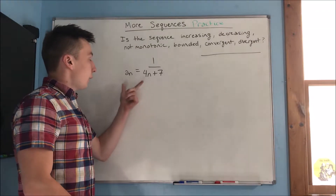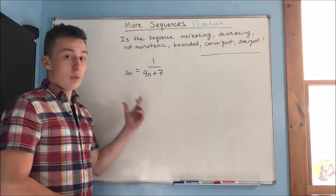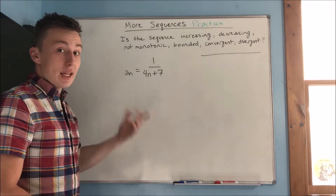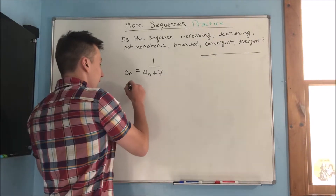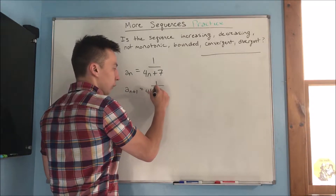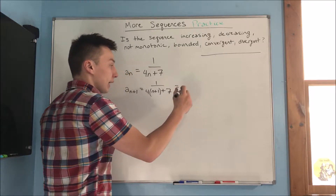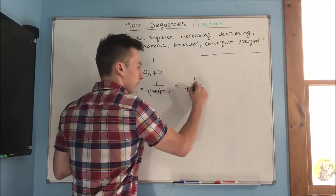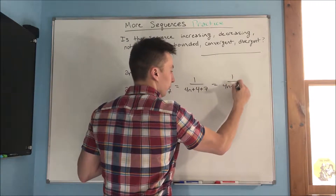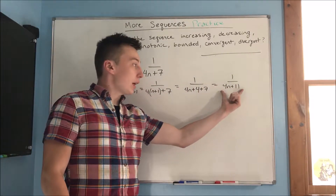Now we have our second sequence: a sub n equals one over four n plus seven. Is this increasing, decreasing, or not monotonic? We can tell by looking at what a sub n plus one is. A sub n plus one equals one over four times (n plus one) plus seven, which distributes to one over four n plus four plus seven, giving us one over four n plus eleven.